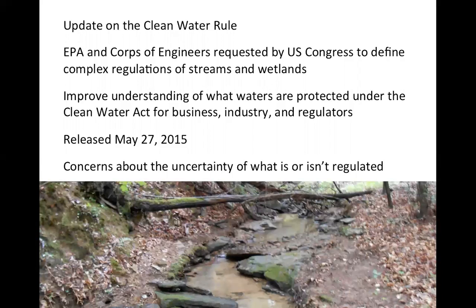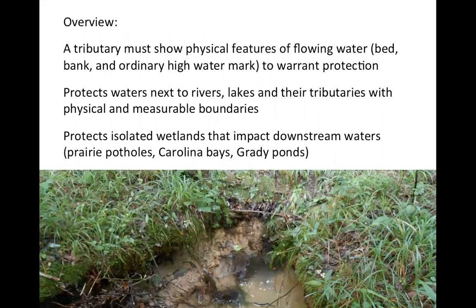Back in 2015, a report was released that had been requested by the United States Congress, having the U.S. Environmental Protection Agency and Army Corps of Engineers define and describe the rules associated with what is a stream, what is a wetland, and what is required if there is an impact and what falls under an exemption. Several findings were very similar to what had been said before: a tributary has to have flowing water, a stream bed, stream banks, and an ordinary high water mark. Waters adjacent to rivers, lakes, and their tributaries had defined boundaries.